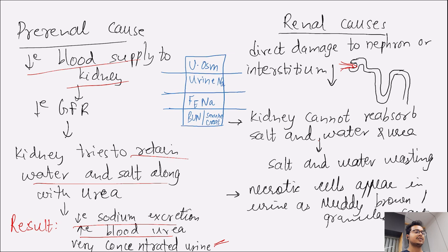We can summarize this in a table. Urine osmolarity is high. Urine sodium and fractional excretion of sodium is low. BUN to serum creatinine ratio is high.